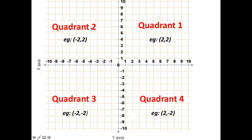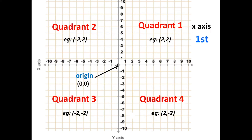So we have positive, negative, positive, negative, negative, negative, positive — four quadrants. The origin is in the middle and is classed as (0, 0). Sometimes in your exam it will say 'the origin' or it will say 'zero zero' — just remember that means the same thing.